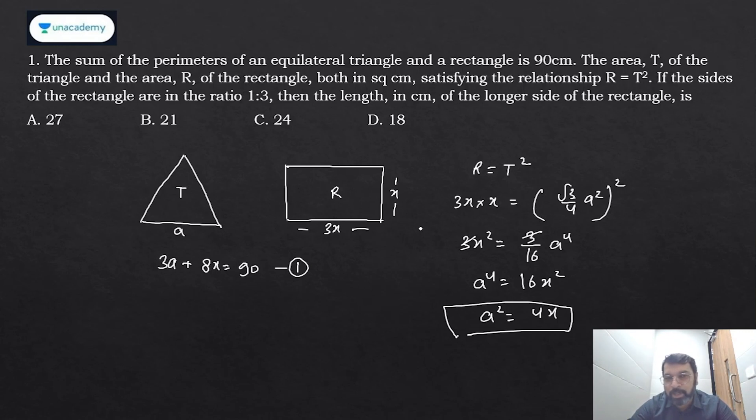We need to find 3x, the longer side of rectangle. First point: it should be a multiple of three, but all the options are multiples of three, so that does not give me any criteria. Now look at this: if a² = 4x, then a² is a perfect square.